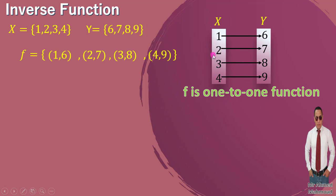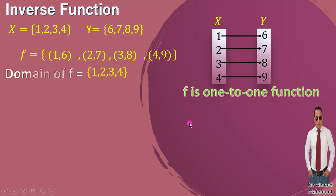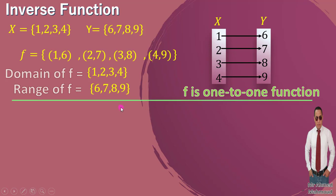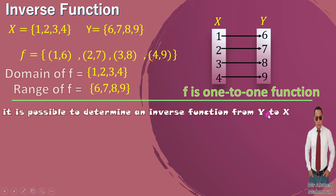Why is it one-to-one? First, it's a function because every element from X has one image in Y. It's one-to-one because every element in Y is connected with only one element in X — no element in Y is connected to more than one element in X. In this case, it is possible to determine an inverse function from Y to X. The condition is that it must be a one-to-one function.